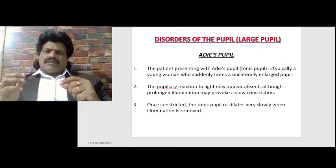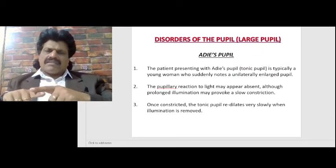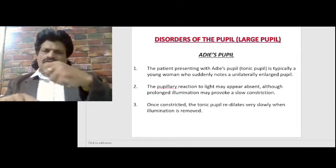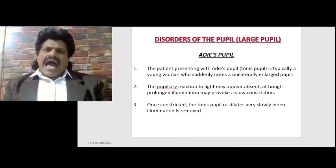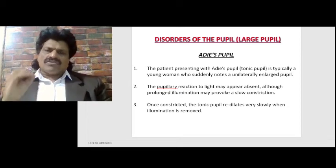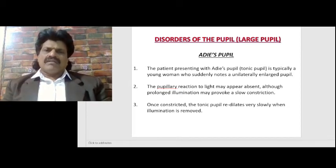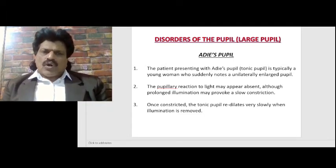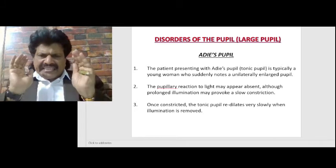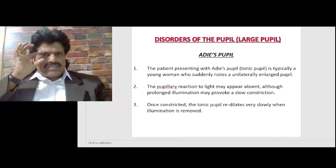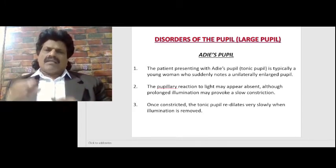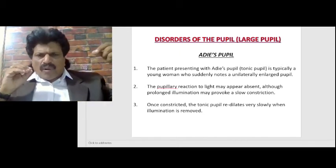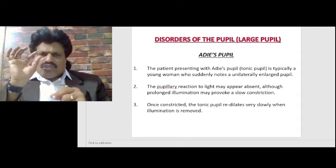Another cause of large pupil is Adie's pupil. The patient presenting with Adie's tonic pupil is typically a young woman who suddenly notes a unilaterally enlarged pupil. The pupillary reaction to light may appear absent, although prolonged illumination may provoke a slow constriction.